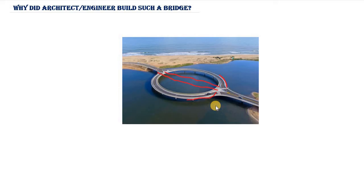The role of the architect is to make the structure meet an aesthetic demand — they always go for the beauty of the structure. The engineer, on the other hand, goes for the strength demand of the structure, trying to make sure it has enough strength to resist the applied load.